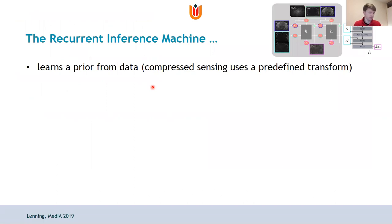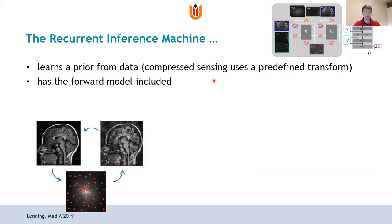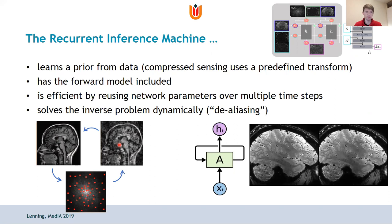We propose a neural network structure called the Recurrent Inference Machine (RIM) that learns this prior from data. In contrast to compressed sensing where the prior was predefined using the wavelet transform, the network implicitly learns this from our data. It is physics-informed: the forward model is included, we know how we sparsely sample in Fourier domain, and we can formulate this problem accurately. The network has an efficient design because it reuses network parameters over multiple time steps and iteratively solves this problem, improving image quality from the initial aliased image until convergence.